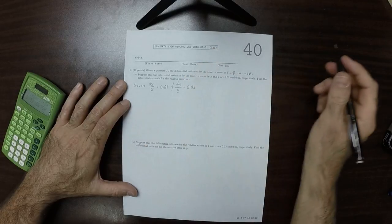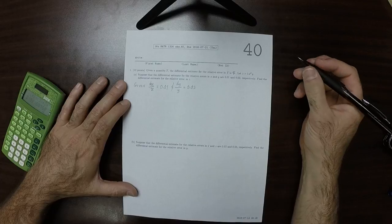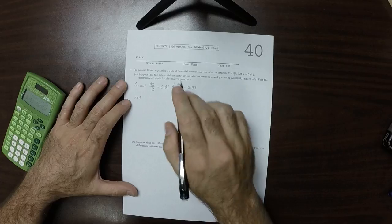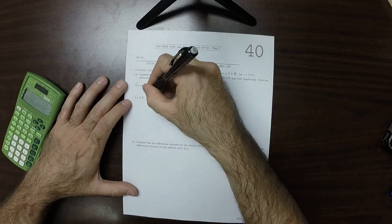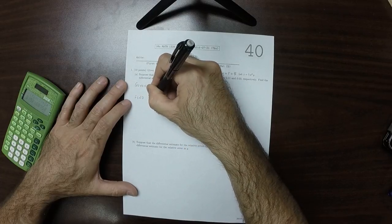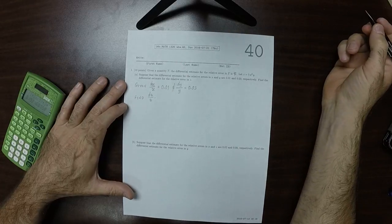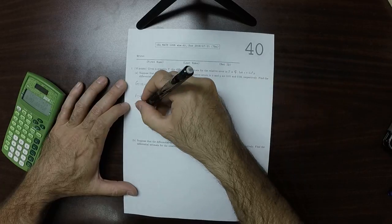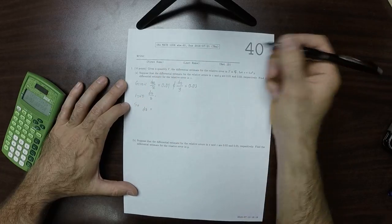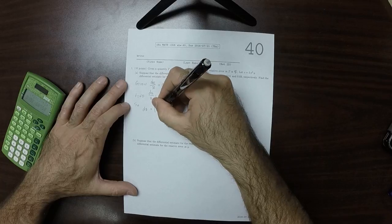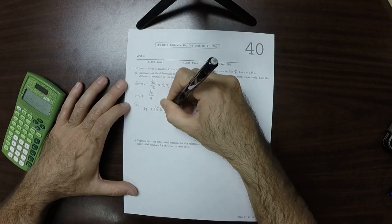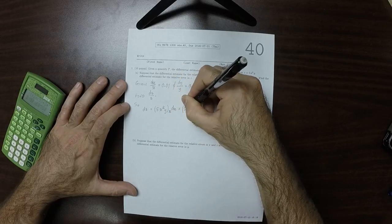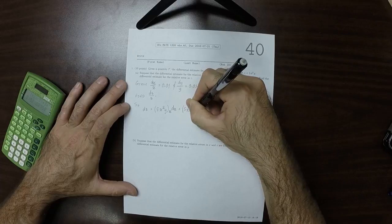So given these relative errors, we're supposed to find the differential estimate for the relative error in z. We're supposed to find dz over z. So dz is 5x squared y the x partial dx plus 5x squared y the y partial dy.